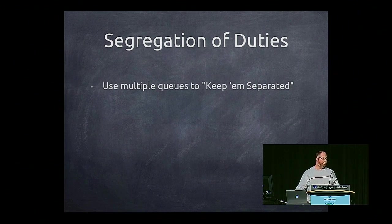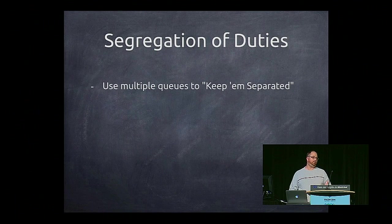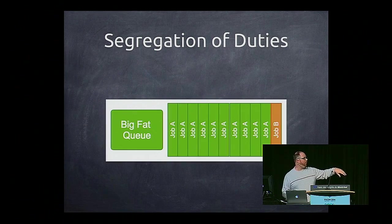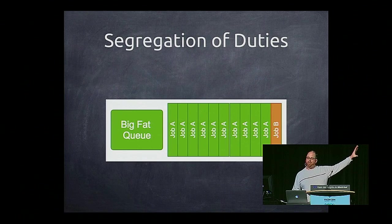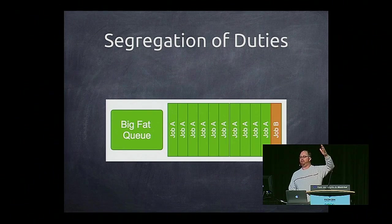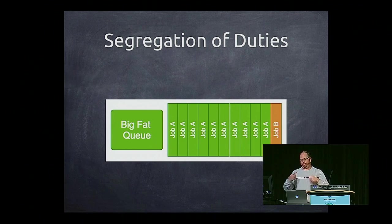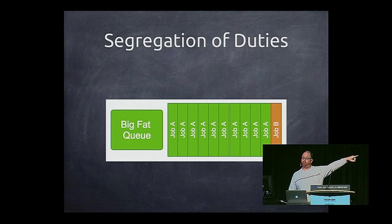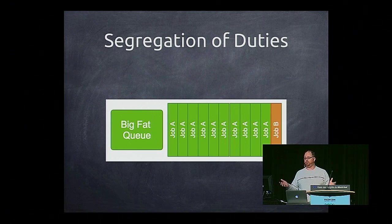Segregation of duties. First, utilize multiple queues to keep them separated so you can divide up your tasks. If you've got just one big fat queue on RabbitMQ, and it's got 10, 20, 40, 50 jobs of one type that just keeps firing off really fast, and you've got job B way back at the end using only one queue, it's just going to be sitting there waiting for a long time until that task ever gets executed.